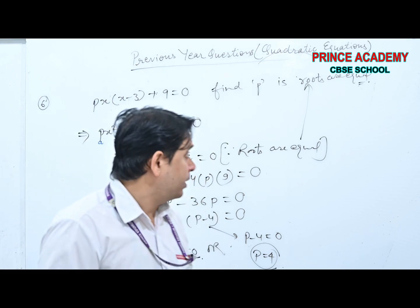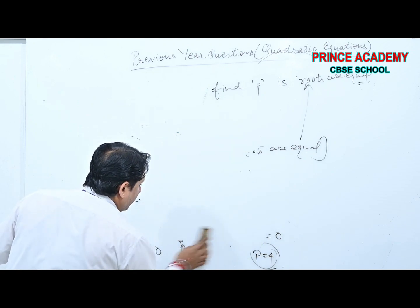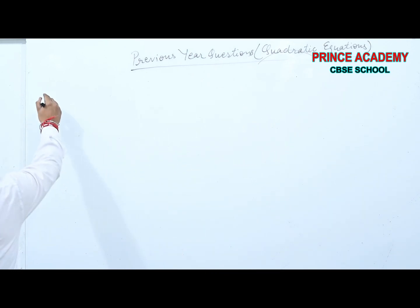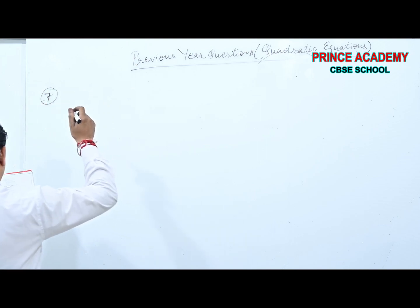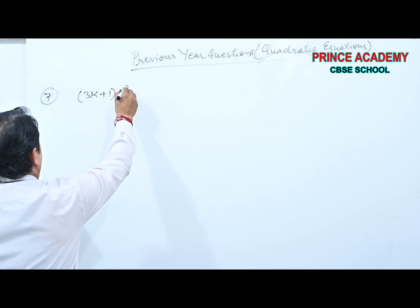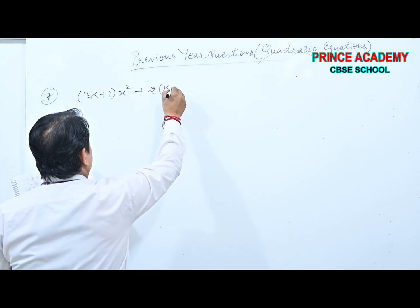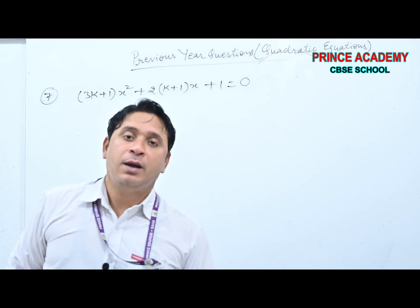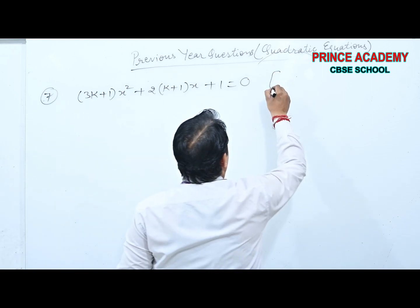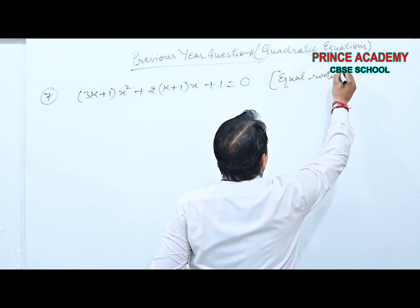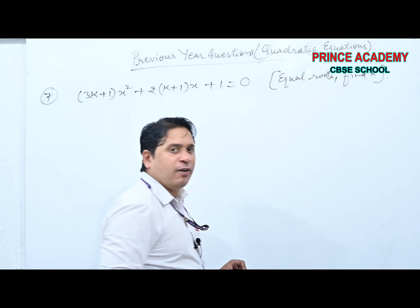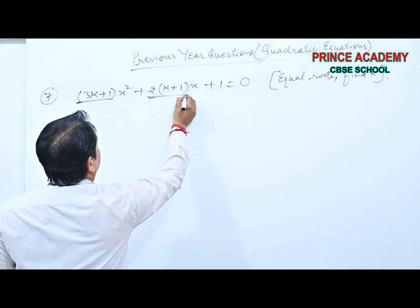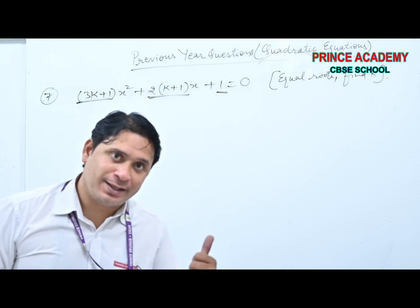Question 7: (3K+1)x² + 2(K+1)x + 1 = 0, having equal roots. Find K. Compare with standard form: A = 3K+1, B = 2(K+1), C = 1. Since roots are equal, D = B²−4AC = 0.